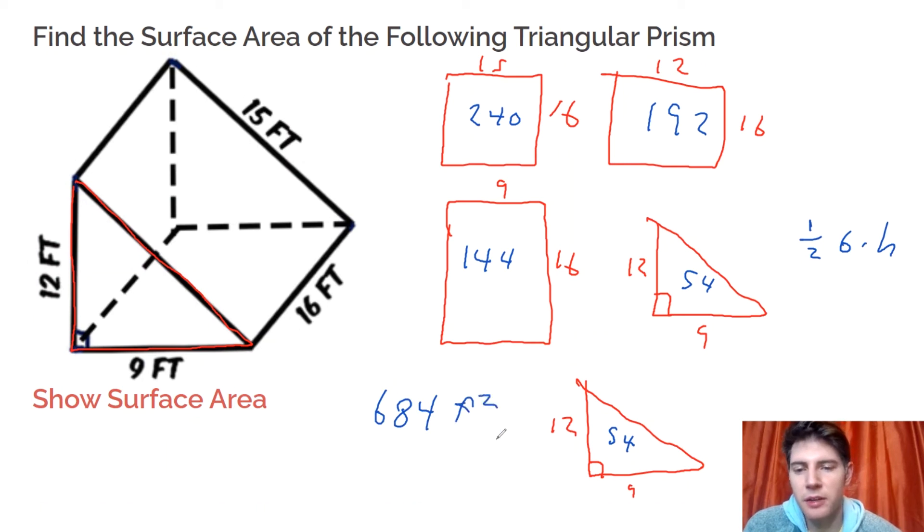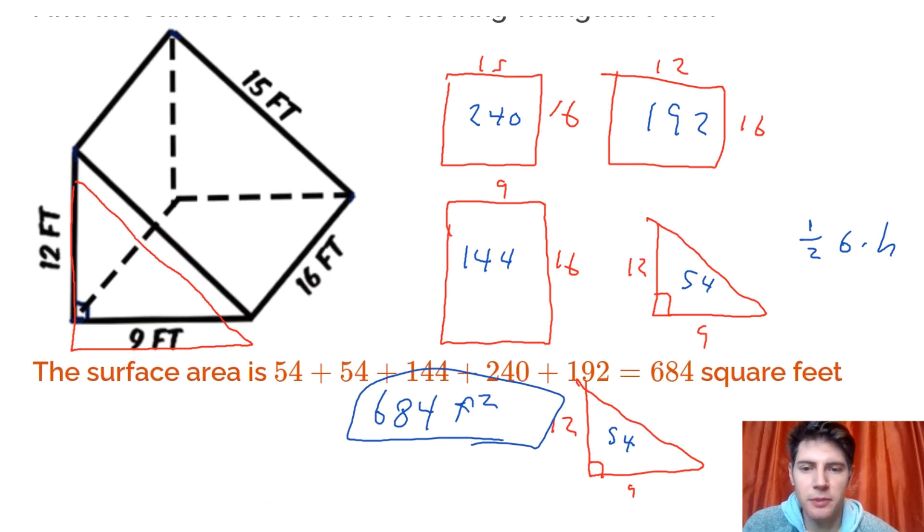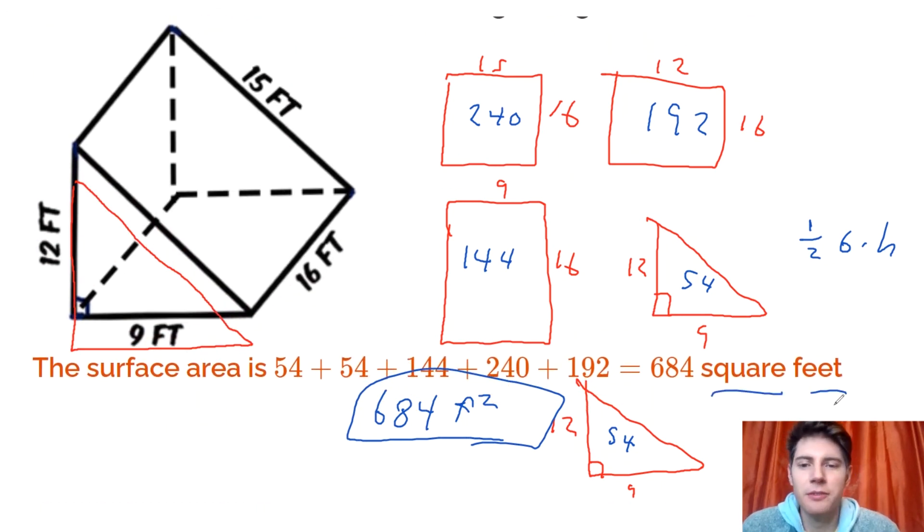And then since it's an area, it's feet squared, and that's the answer to the question. And we can check it: 684 feet squared or they said square feet, it doesn't matter, feet squared or square feet. So that's how to do these, the surface area of triangular prisms.